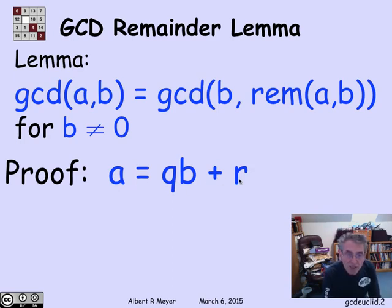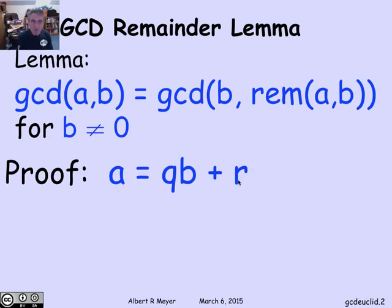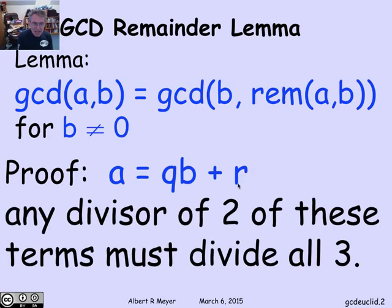If you look at this simple expression, what becomes apparent is that if you've got a divisor of 2 out of 3 of these terms, then it's going to divide the third term. For example, if you have a divisor of b and r, then the sum of those two things is also going to have the same divisor, which means that a will have that divisor.